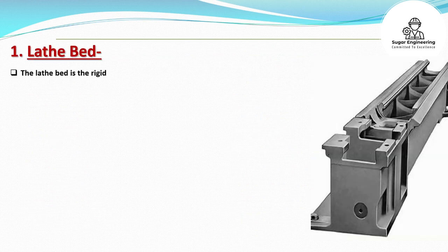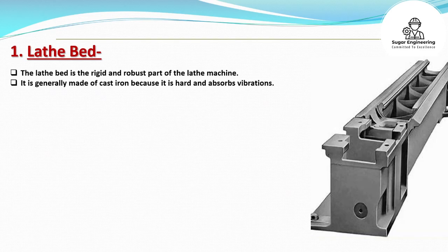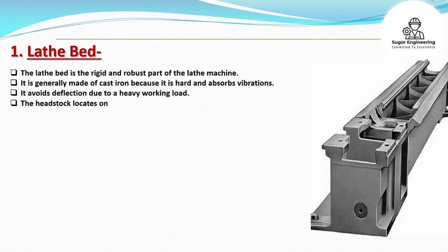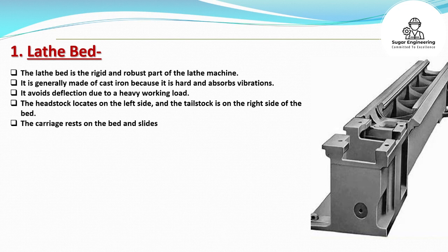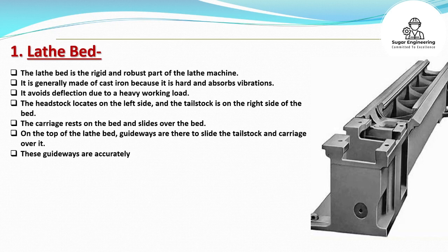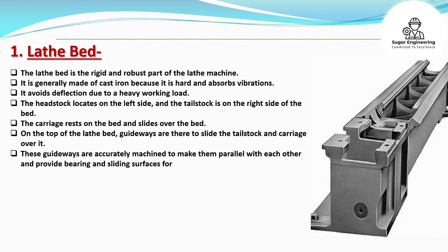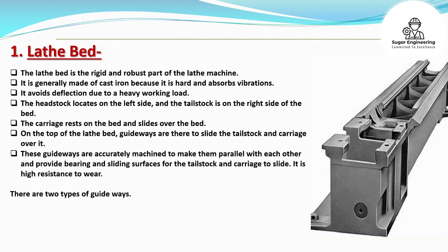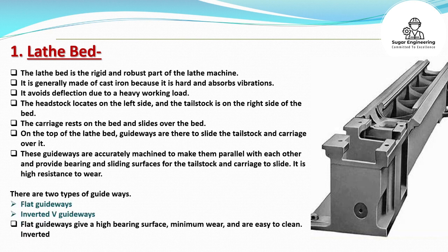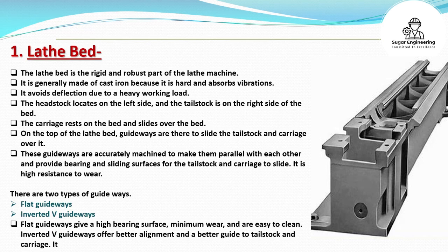The lathe bed is the rigid and robust part of the lathe machine. It is generally made of cast iron because it is hard and absorbs vibrations. It avoids deflection due to a heavy working load. The headstock locates on the left side, and the tailstock is on the right side of the bed. The carriage rests on the bed and slides over the bed. On the top of the lathe bed, guideways are there to slide the tailstock and carriage over it. These guideways are accurately machined to make them parallel with each other and provide bearing and sliding surfaces for the tailstock and carriage to slide.